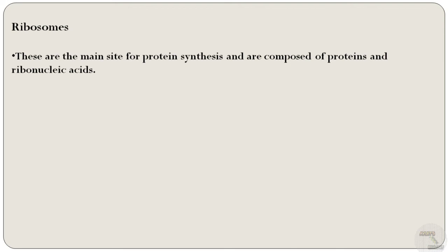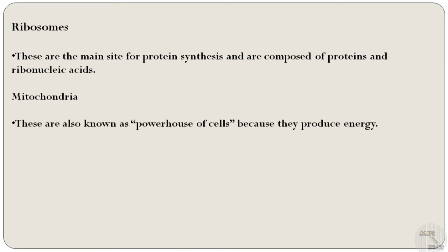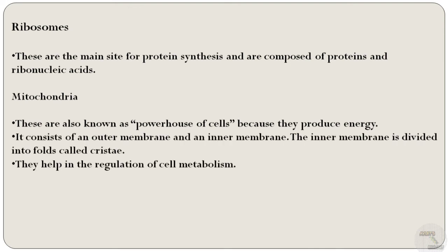Next is the mitochondria. Mitochondria are also known as the powerhouse of the cell because they produce energy. It consists of an outer membrane and an inner membrane. The inner membrane is divided into folds called cristae, which are the finger-like structures inside a mitochondria. Mitochondria help in the regulation of cell metabolism.